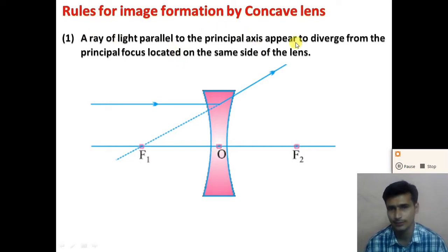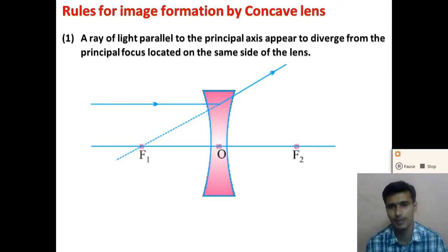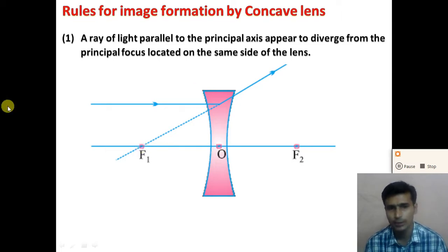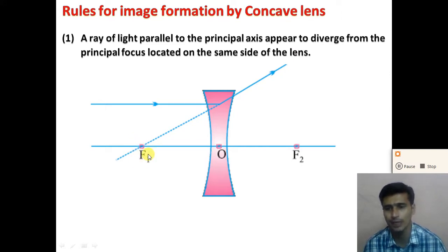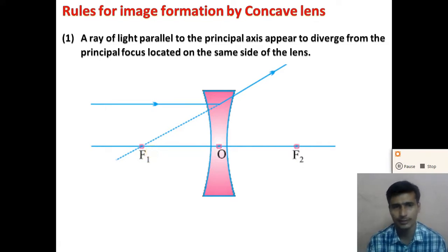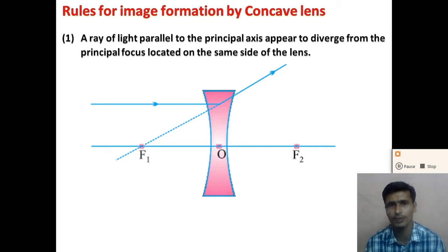...will appear to diverge from the principal focus located on the same side of the lens. When a ray of light is parallel to the principal axis, after refraction by a concave lens it will diverge such that it will appear to pass from the principal focus, which is located on the same side as the object. So the first rule states that a ray parallel to the principal axis after refraction appears to diverge from the principal focus on the same side of the lens.